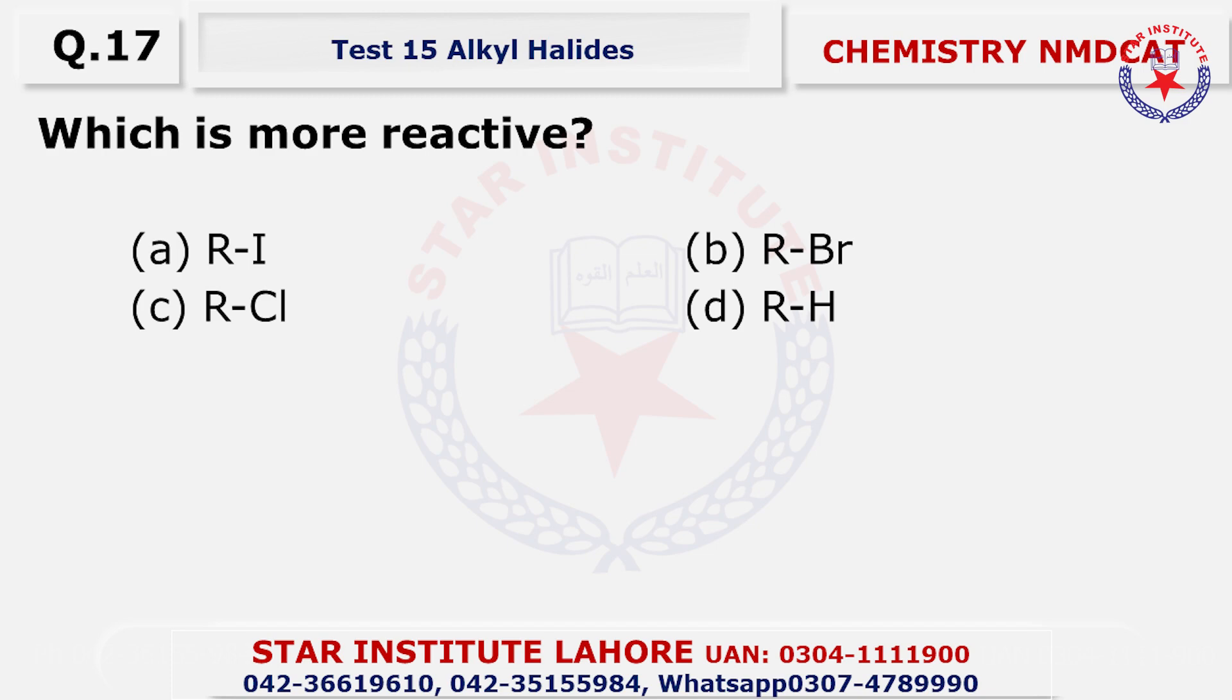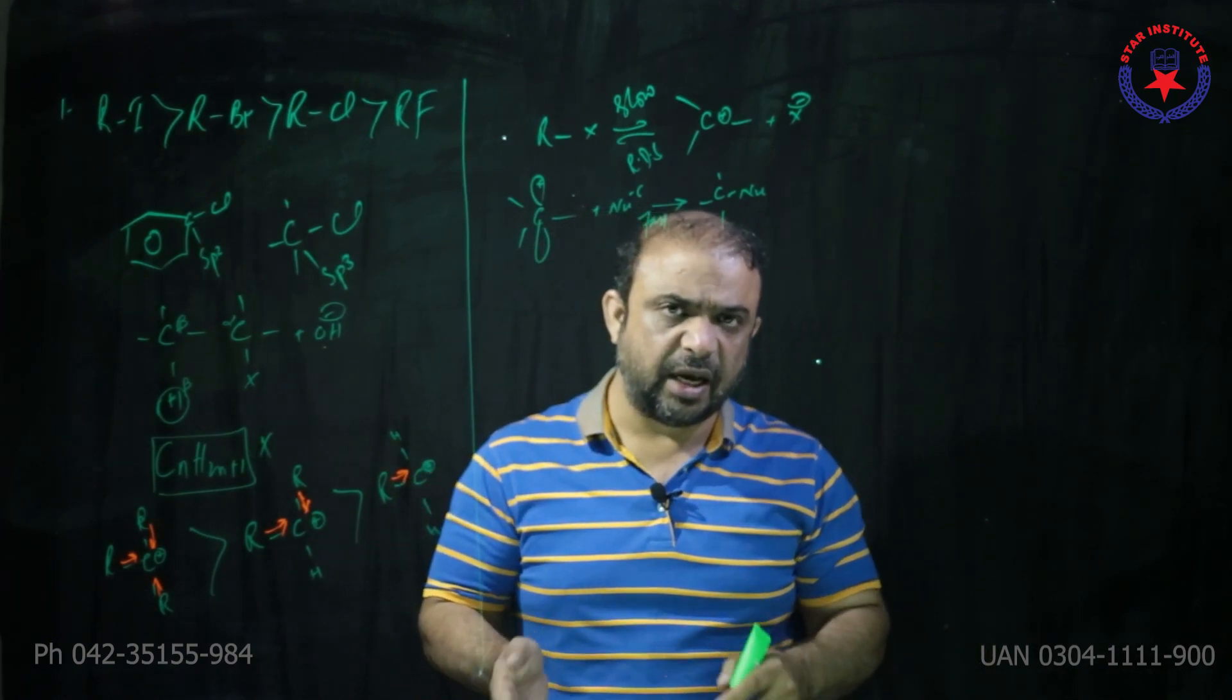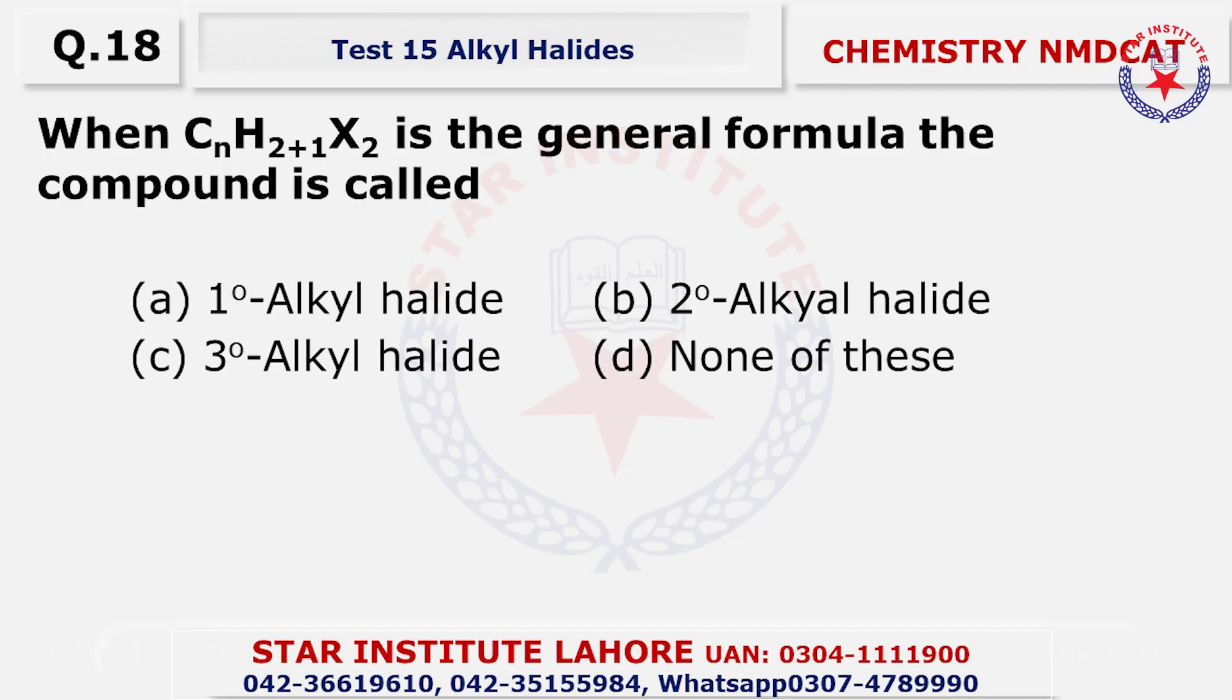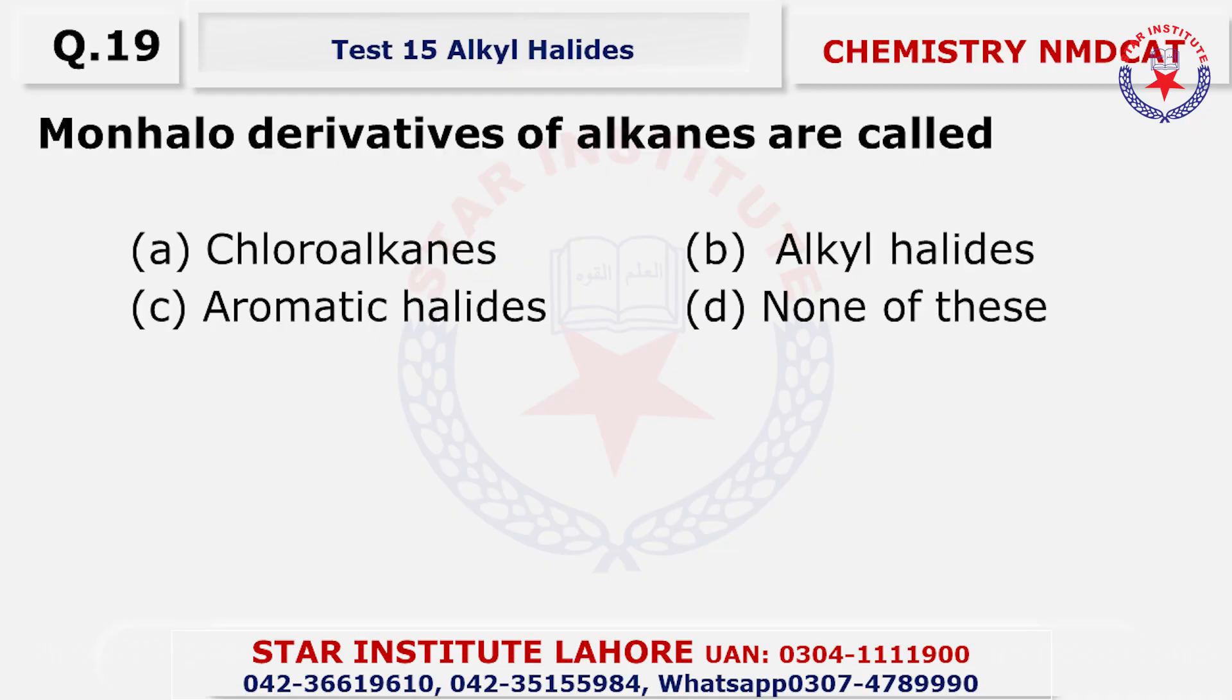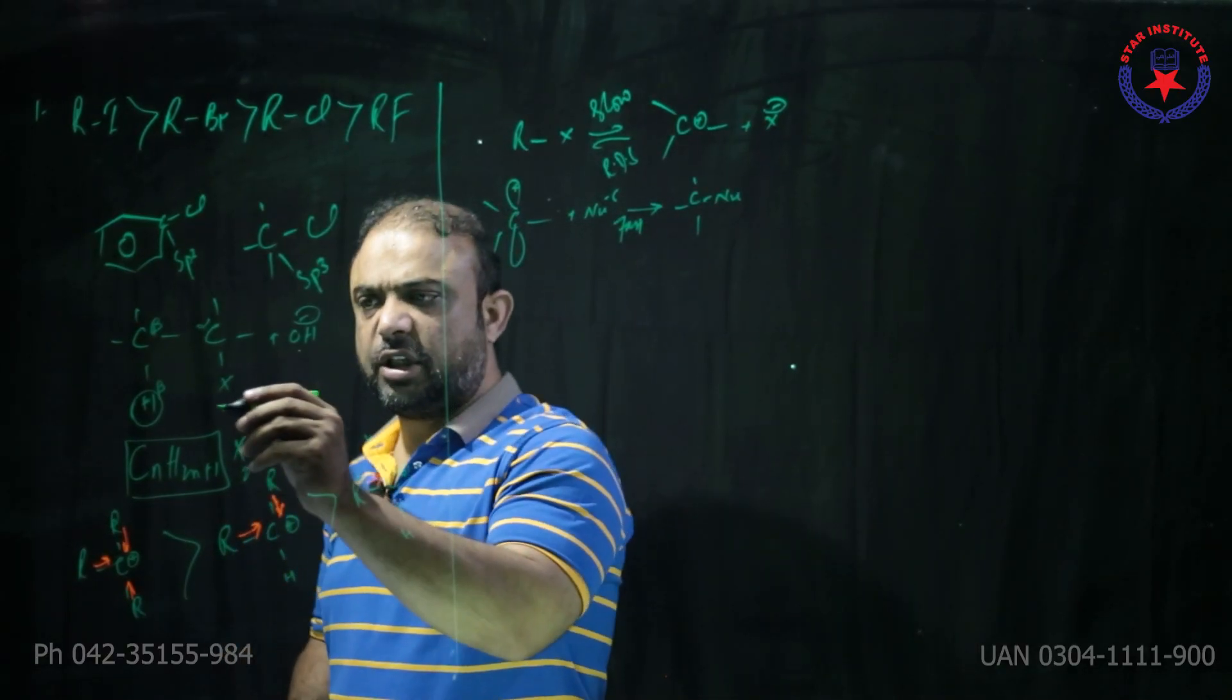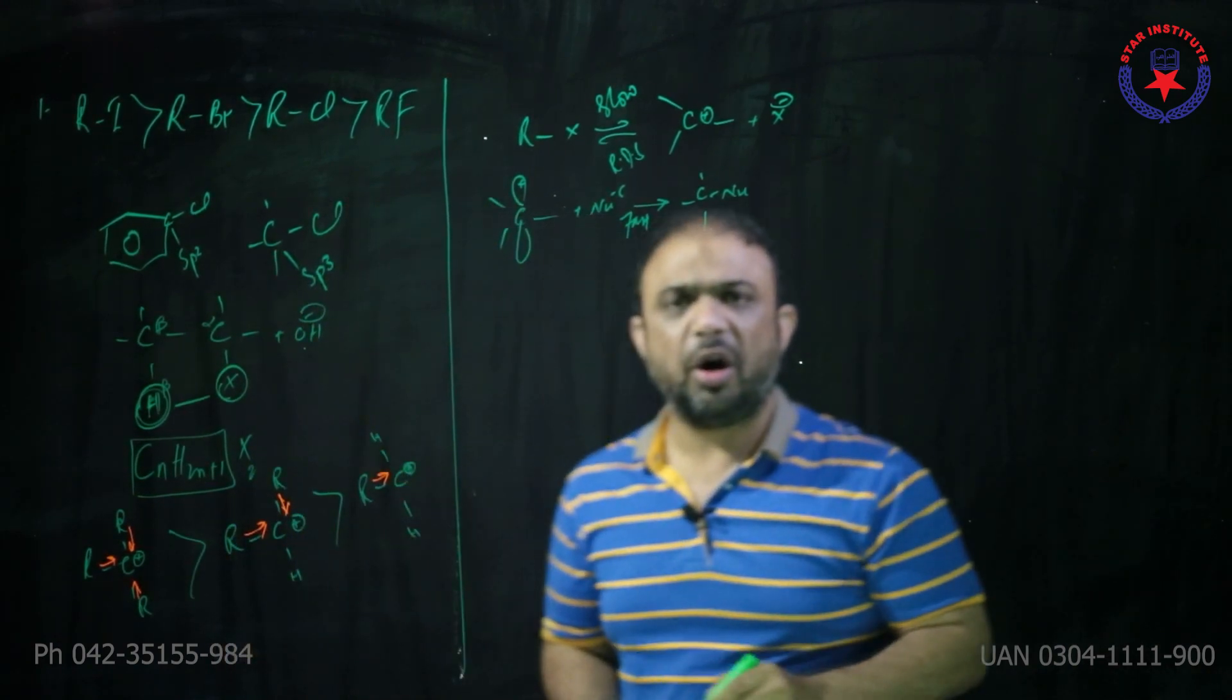Question number 17, which is more reactive? RI is more reactive, alpha is your answer. RI, RBr, RCl mein se jitna halogen atom ka size bada hai utni reactivity zyada hai, todna aasan hai. Question number 18, CnSn+1X2, beta agar main X2 laga doon toh valency hi puri nahi hoti, none of these. Question number 19, mono halo derivatives, kitna halogens hain sirf ek hai, these are called as alkyl halides. Question 20, elimination of HX molecules from the two adjacent carbon atom is called as beta dehydrohalogenation. Ek taraf se hydrogen gaya toh dehydro hua aur ek taraf se halogen gaya dehydrohalogenation aur it leads to double bond formation.